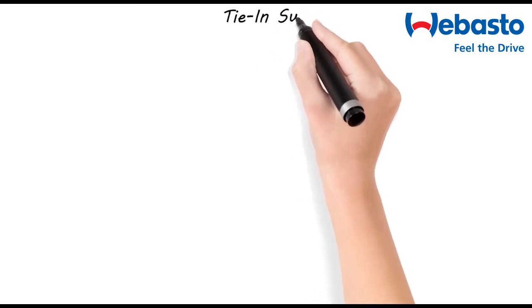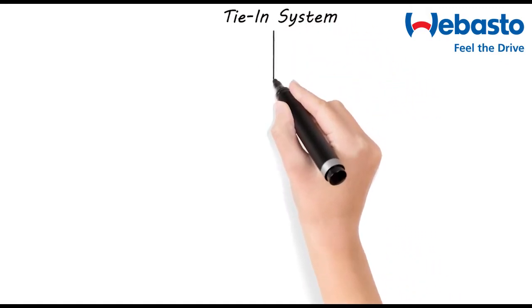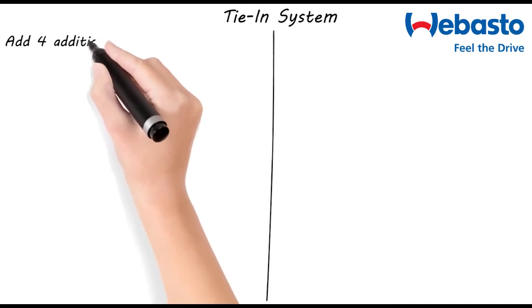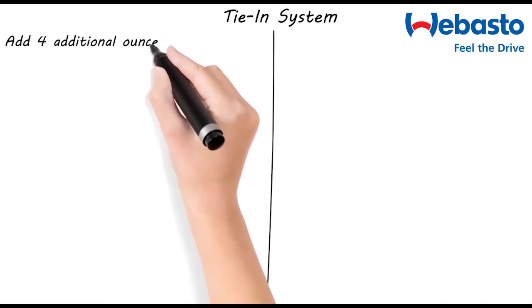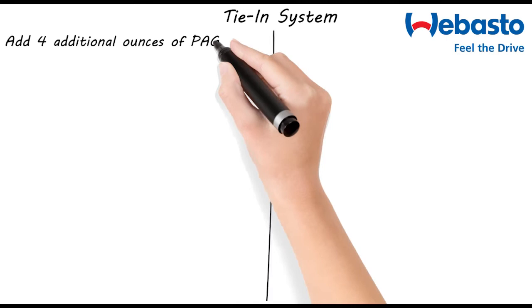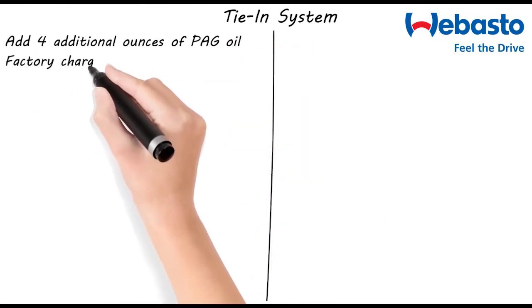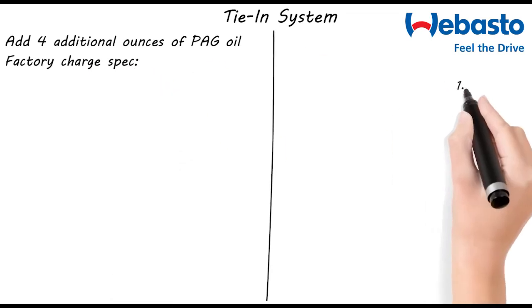We'll start with a tie-in system. With a tie-in system, you're going to have to add four additional ounces of PAG oil to the factory charge. Speaking of the factory charge, that's the first piece of information you'll need to know. In this example, the factory charge is 1.9 pounds of refrigerant.